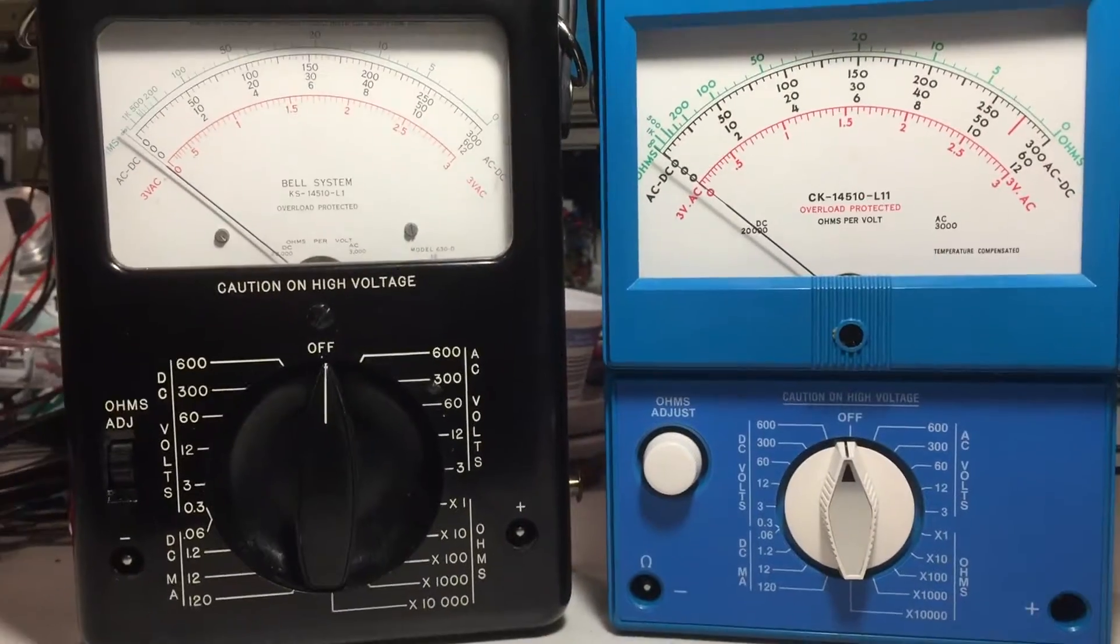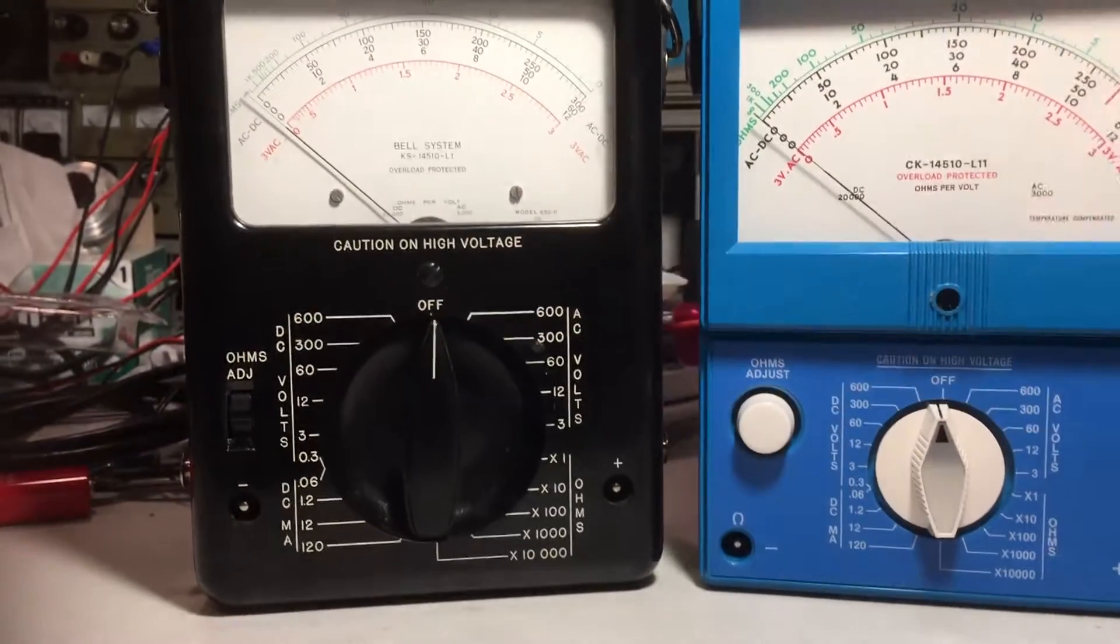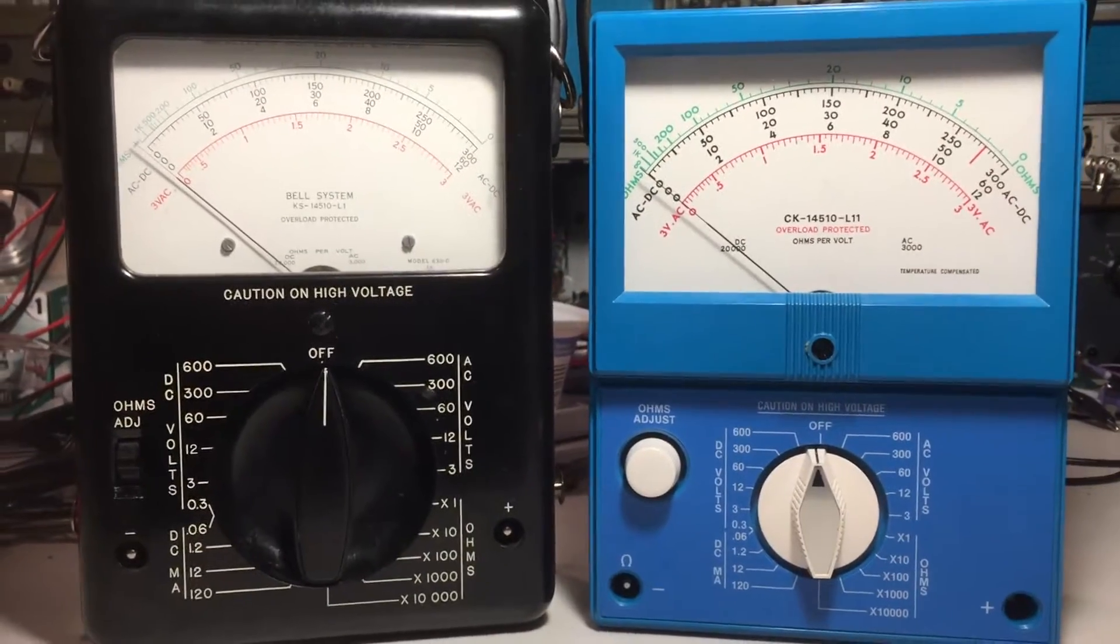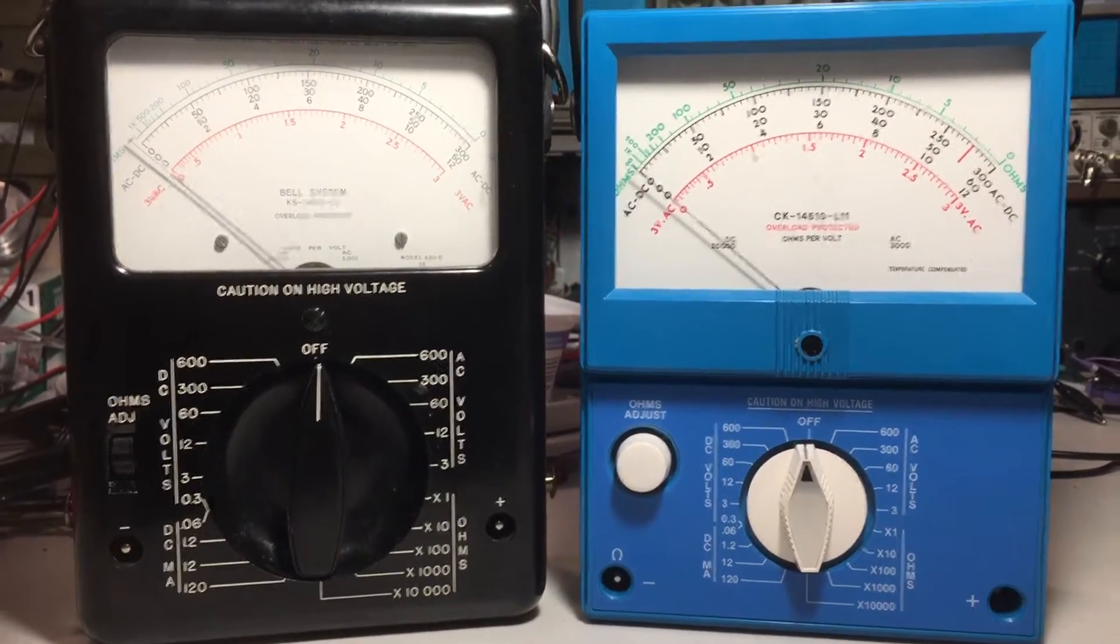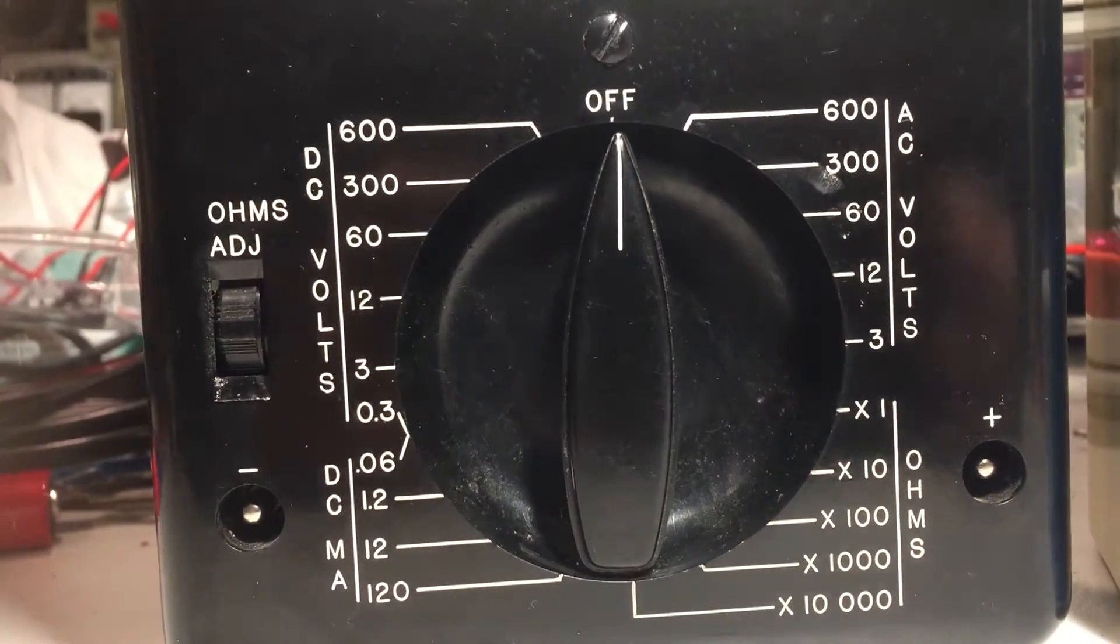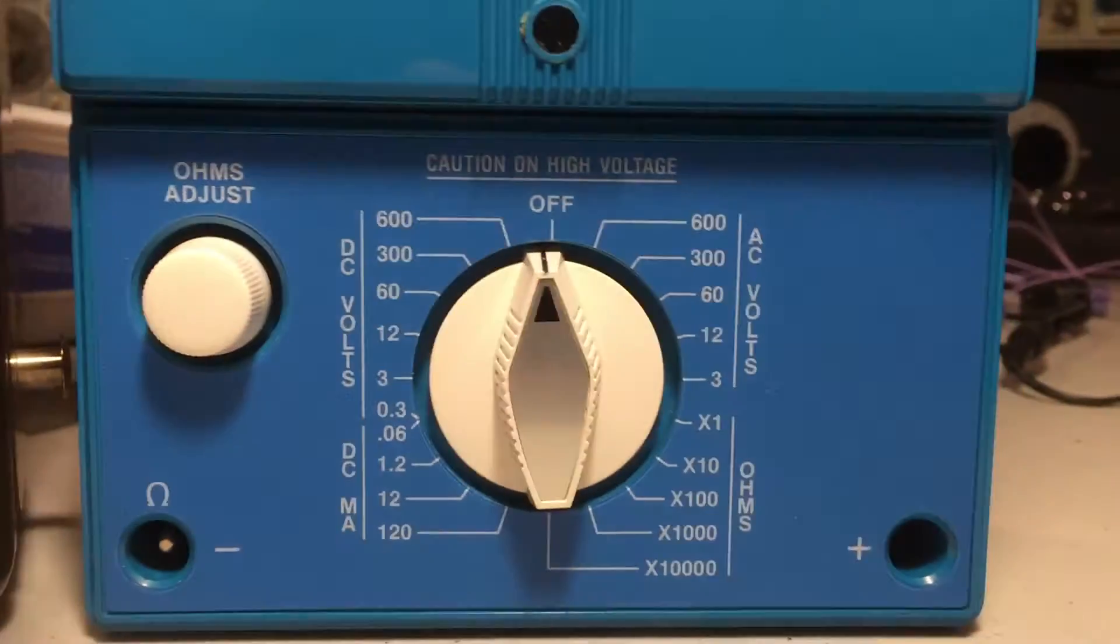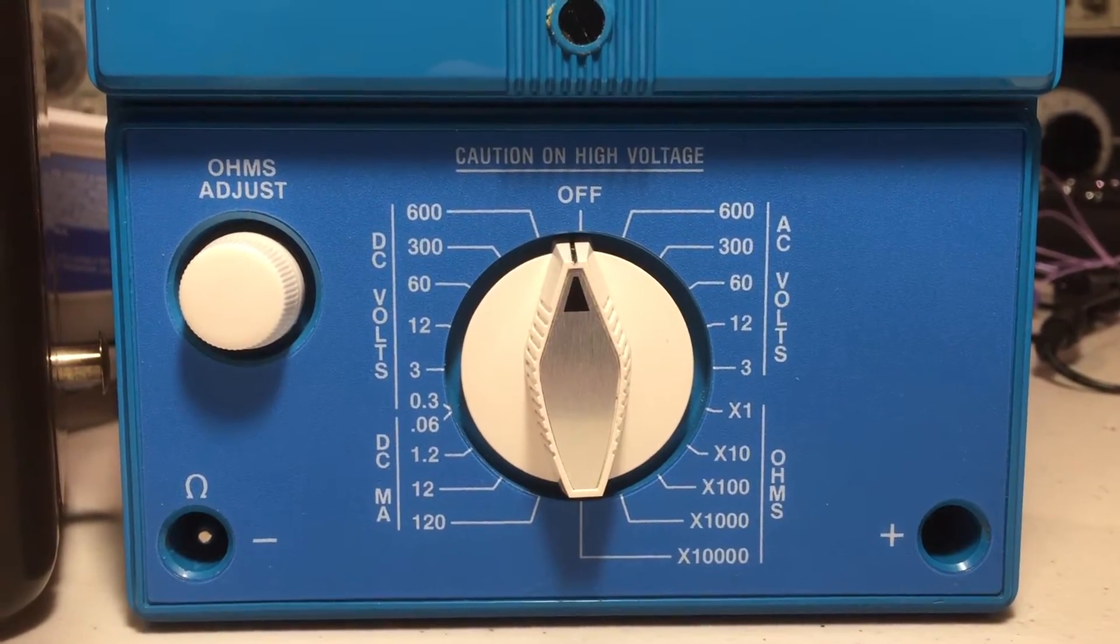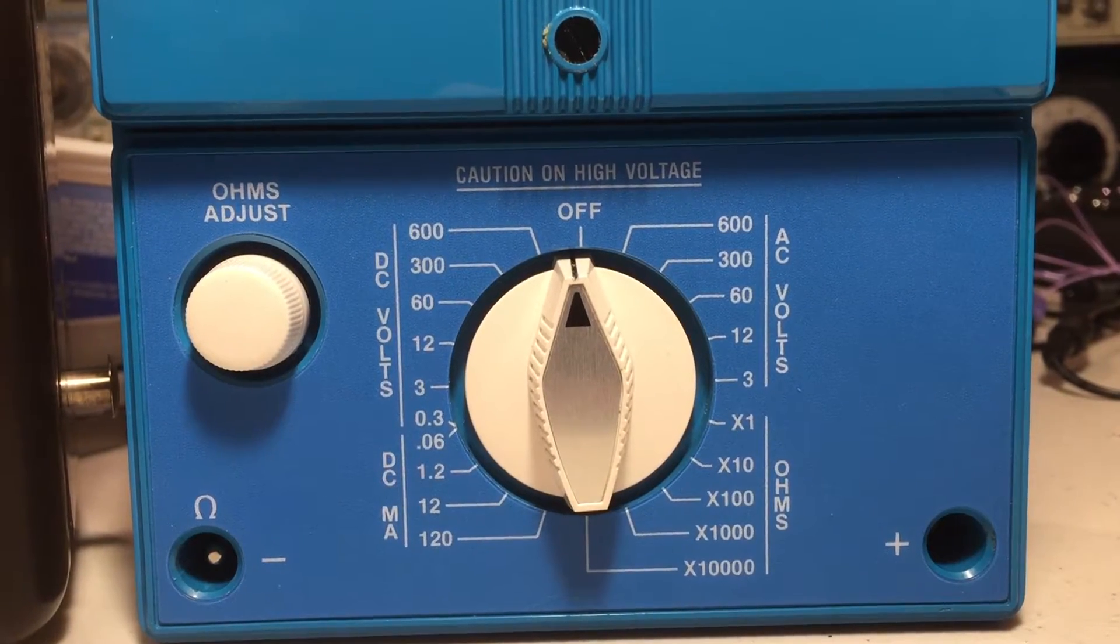Basically, these were regular meters. This is a Simpson and the one on the left is a Triplet that were adapted for use by AT&T and the Bell System in general. You'll see they have a standardized setup on the range switch here that those two range switches are indeed the same. I guess that would make it much easier for a tech to switch between different meters.